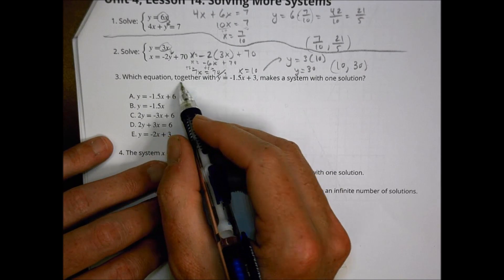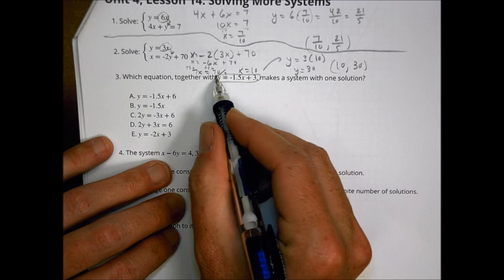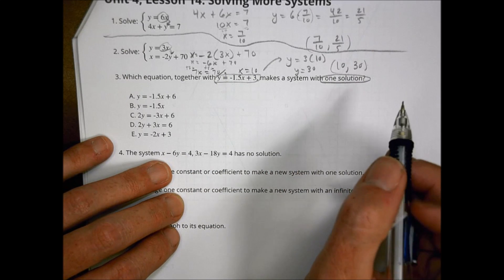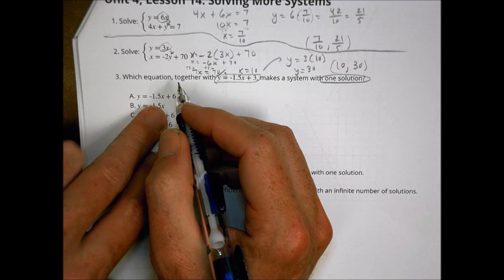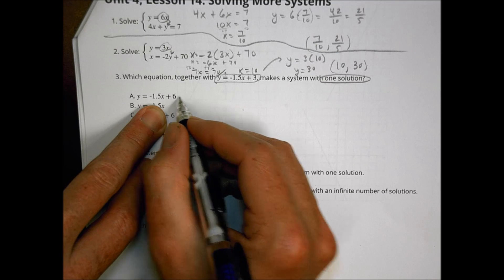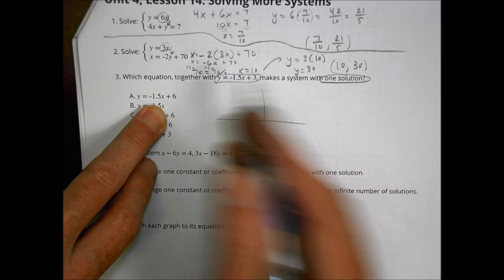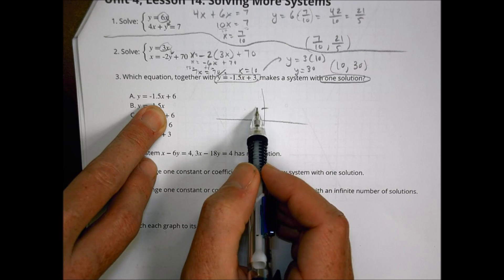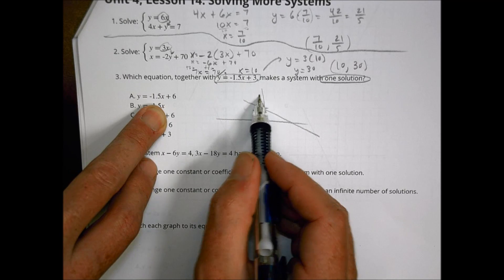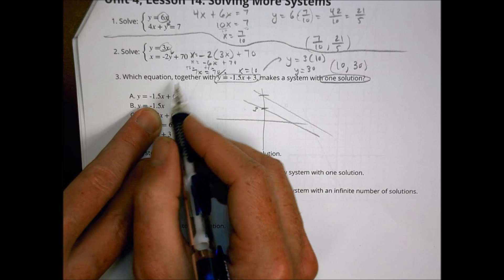Which equation, together with y equals negative 1.5x plus 3, makes a system with one solution? Let's take a look here. For A, we have the same exact slope but a different y-intercept. That's going to cause something like this. If this one is here at 3, and it's going down a negative slope there, and that's the same slope but at 6, it's going to be a parallel line like that. It's never going to meet. There'll be no solution for that one.